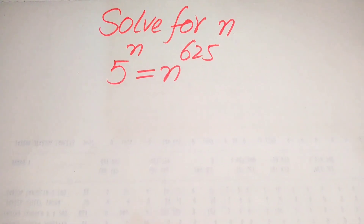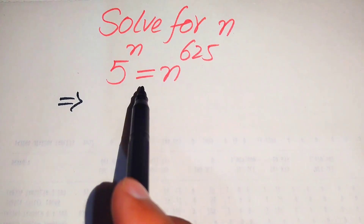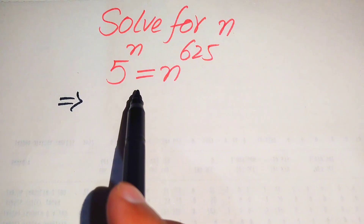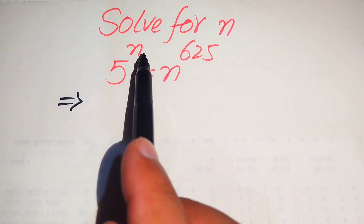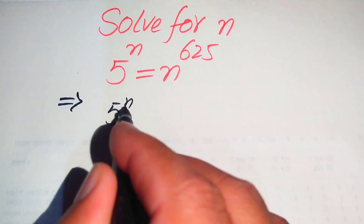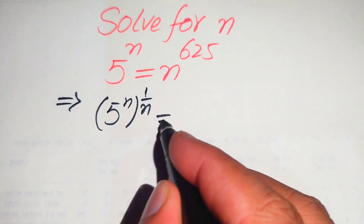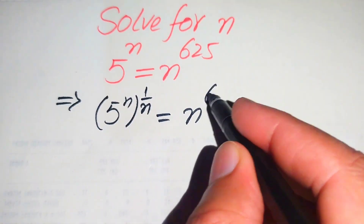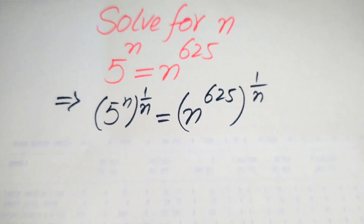We move towards the solution of this problem. The very first thing we are going to do is move the variable terms to the right-hand side and the constant term to the left-hand side. To remove this n from the left-hand side, we take the nth root on both sides. So when we take the nth root, it is written as 5 to the power of n, and its whole power is 1 over n, is equal to n to the power of 625, and its whole power is 1 over n.